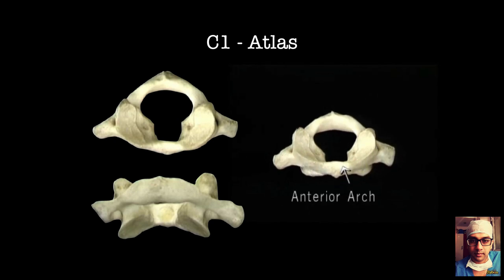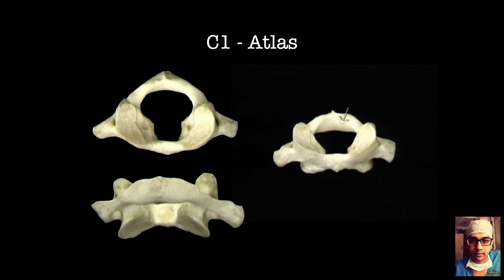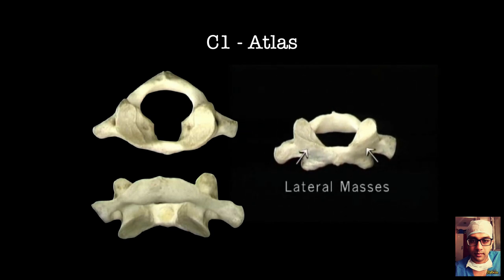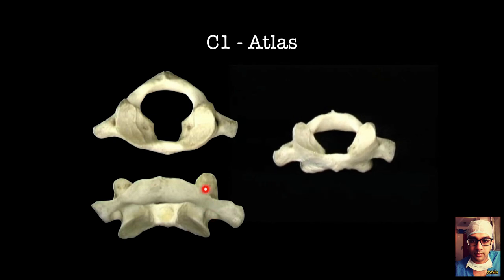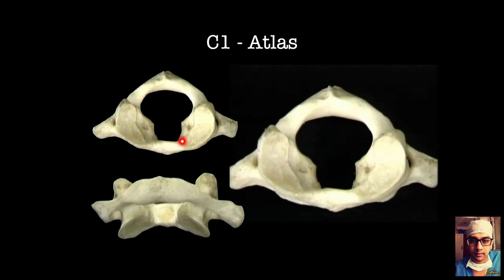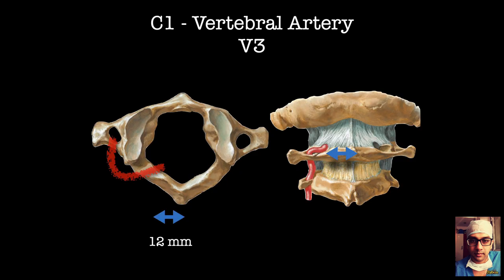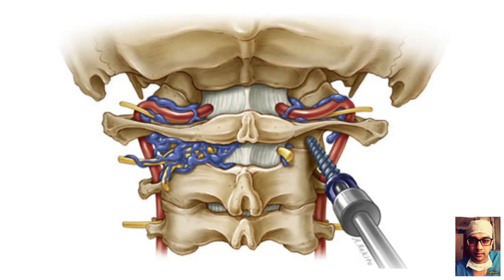Coming to C1, the atlas vertebra. This vertebra has unique anatomy; most instrumentation happens in the lateral mass — a large area of bone connected by the anterior and posterior arch. When dissecting on the posterior arch to expose the lateral mass, don't dissect too far laterally on the superior border of the C1 arch because you will hit the vertebral artery beyond 12 to 15 millimeters. Always dissect on the inferior border to reach the lateral mass.